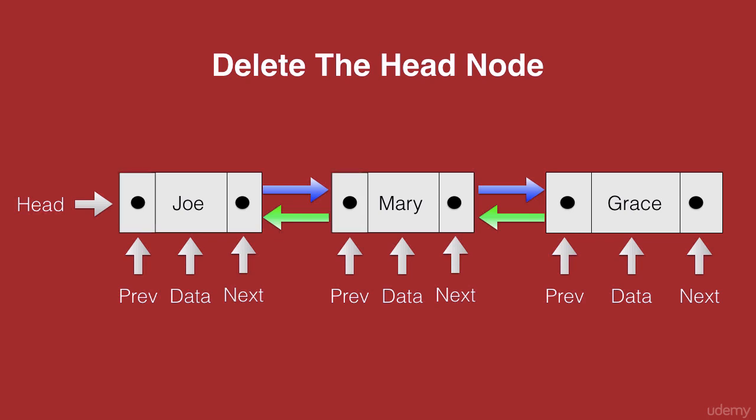We remove Joe as the head node and make Mary as the new head node. Once we do that, by using the previous of Mary, we remove all the pointers of Joe and that removes Joe from the doubly linked list.